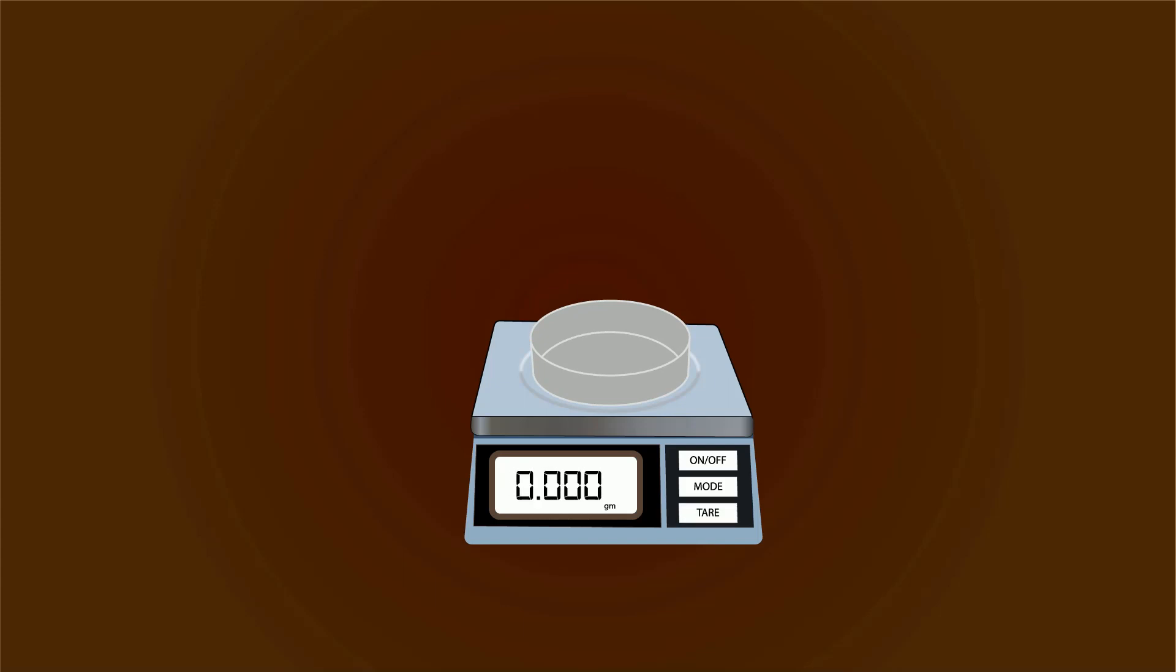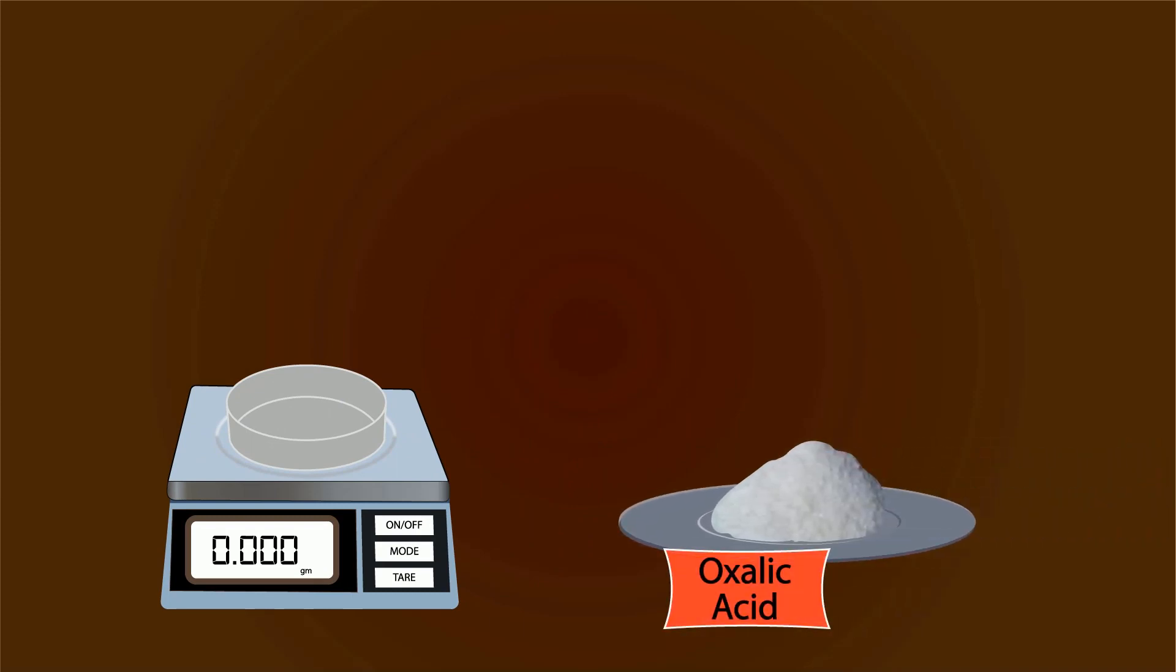Now start adding oxalic acid into the petri dish with the help of a spatula. We have to measure oxalic acid up to 12.6 grams.